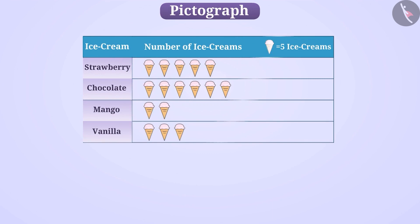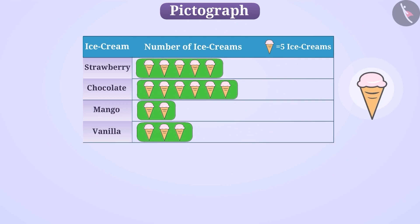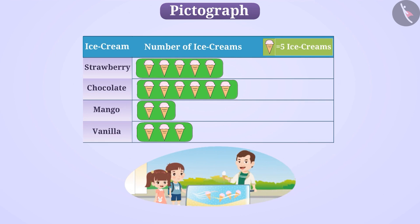In any pictograph, similar images are used to represent the data. At the same time, we are also given the value of an image, using which we can understand the table. Using the pictograph, we can obtain a lot of information, like the number of ice creams of each type sold by the ice cream vendor. We can also compare them without knowing their exact numeric value.